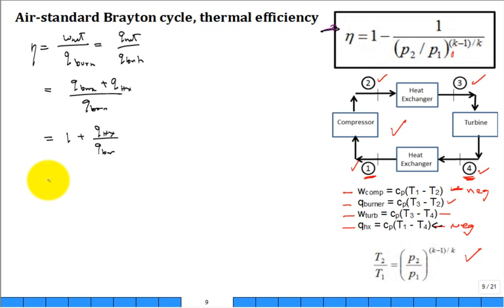So, now I replace what is the Q for the heat exchanger. That Q for the heat exchanger is C sub P T1 minus T4. And then for the burner, it's C sub P T3 minus T2.